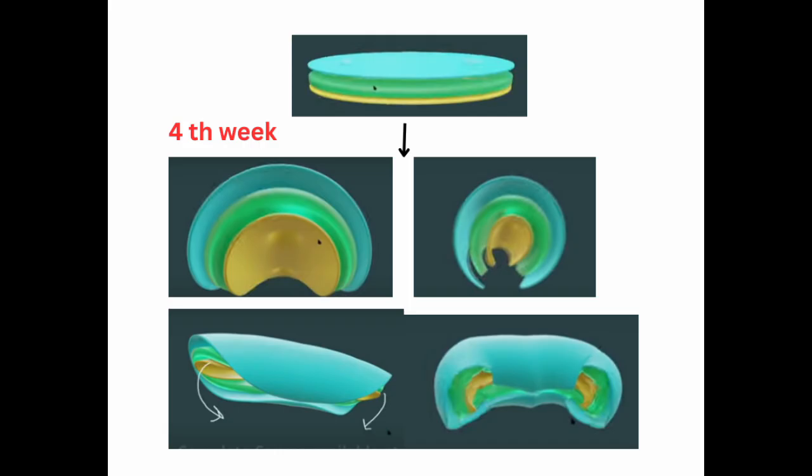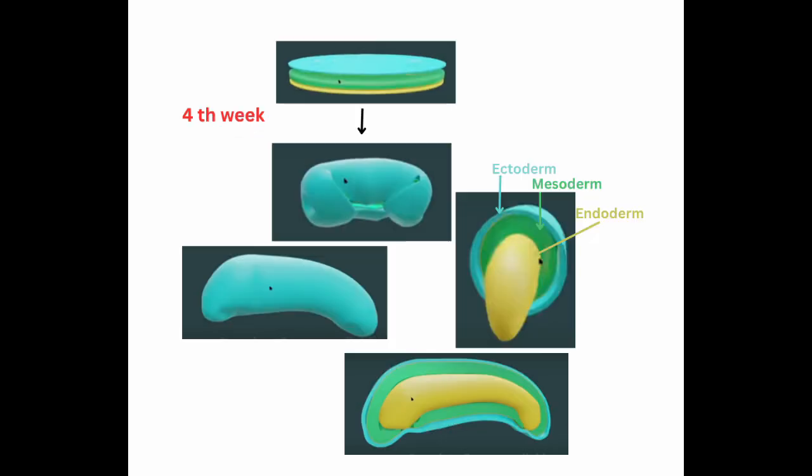Starting from the fourth week, this tri-laminar disc undergoes folding to form a tube-like structure. It folds transversely and also craniocaudally. The disc is changed into a closed tube-like structure with three cylinders nested inside one another: the outermost ectoderm, the innermost endoderm, and mesoderm in between.